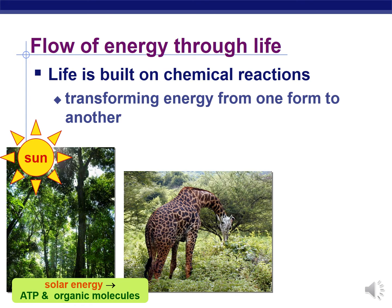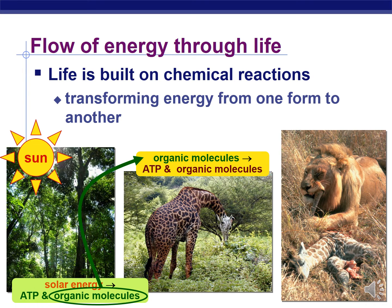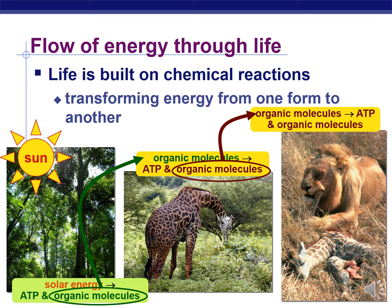And then herbivores come along. They can't use light energy and convert that into chemical potential, but they certainly can take the organic molecules that make up the plants and use the chemical potential in those organic molecules to make energy for themselves — to run, hop, skip, jump, and play — and to also synthesize the organic molecules that make up their own bodies. And then the carnivores come along. They eat those organic molecules that made up the herbivores and use that chemical potential to make their own energy, their own ATP molecules, and make their own organic molecules.